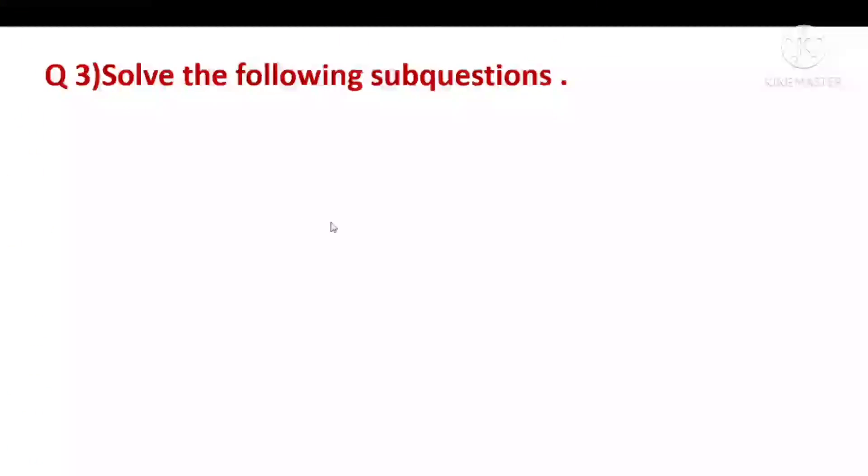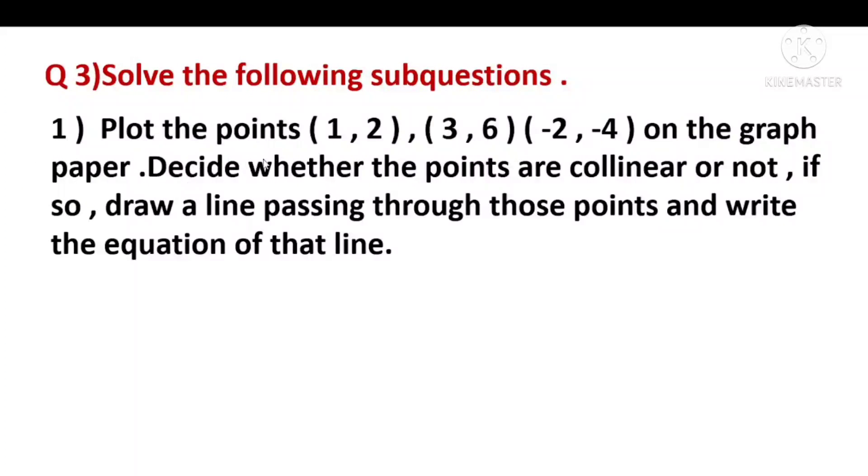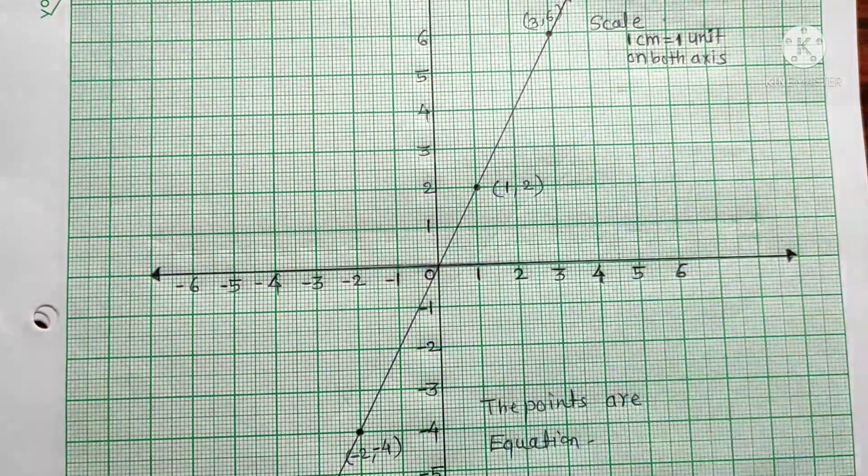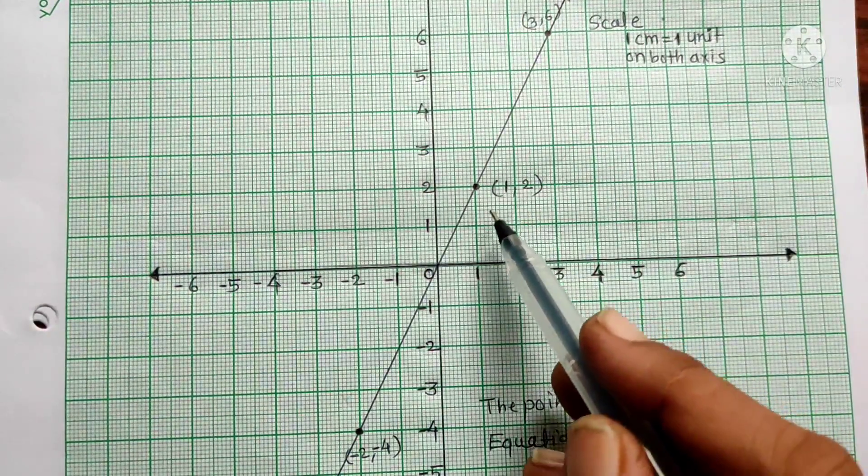Question 3. Solve the following sub-questions. First plot the points 1 comma 2, 3 comma 6, minus 2 comma minus 4 on the graph paper. Decide whether the points are collinear or not. If so, draw a line passing through those points and write the equation of that line. Plot these 3 points on graph paper.